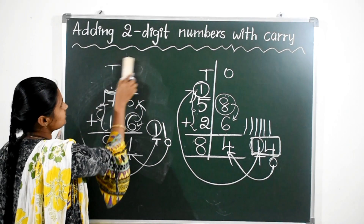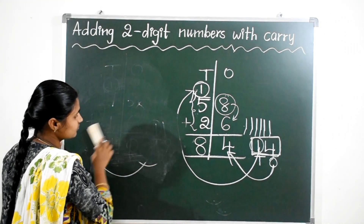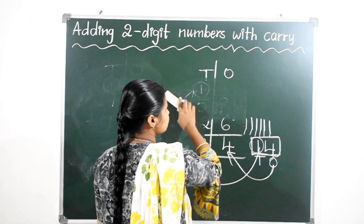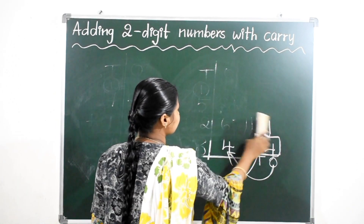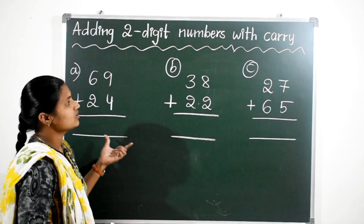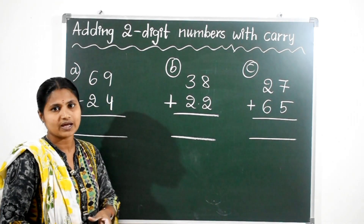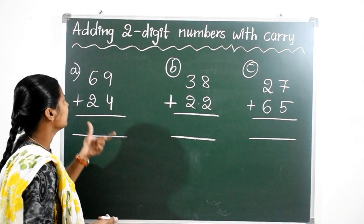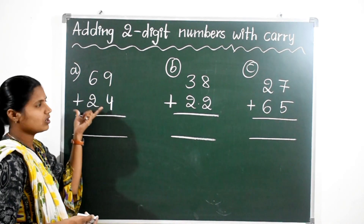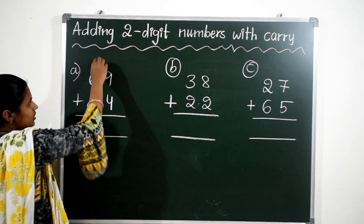Now we will write some more questions on adding 2-digit numbers with carry over. We have 3 more questions. Here: 69 and 24. Add 69 and 24.